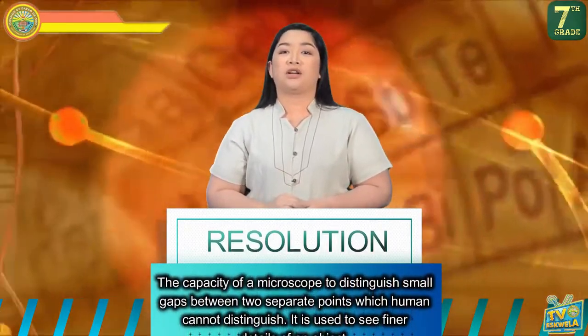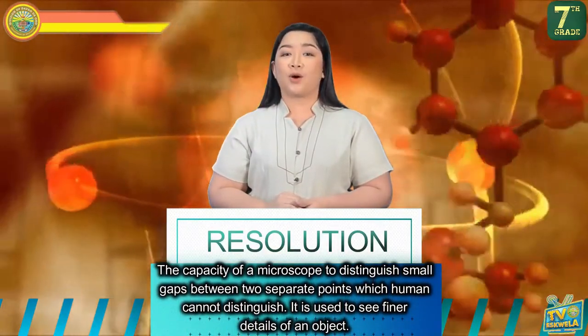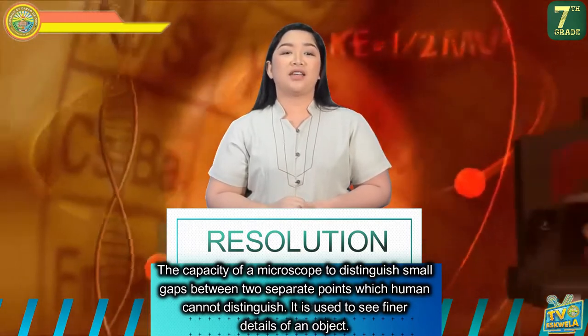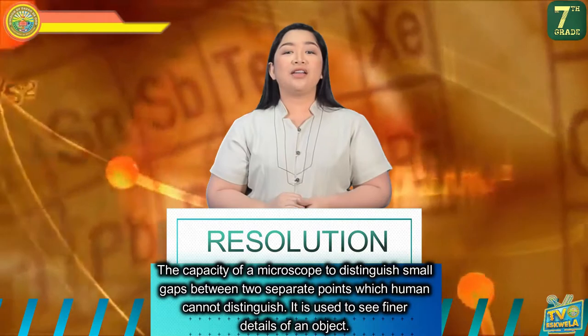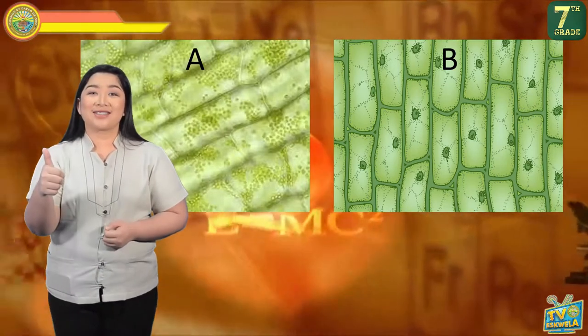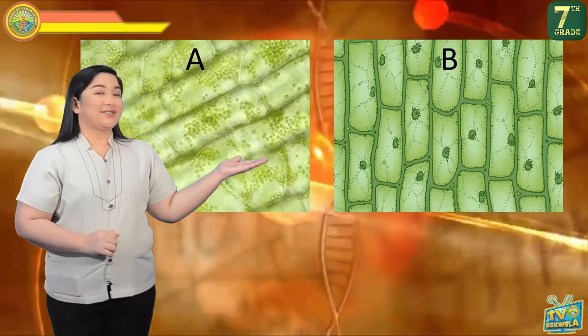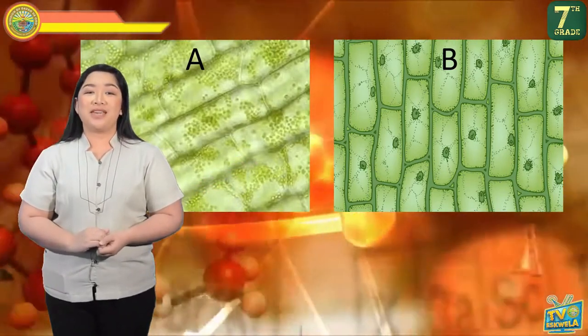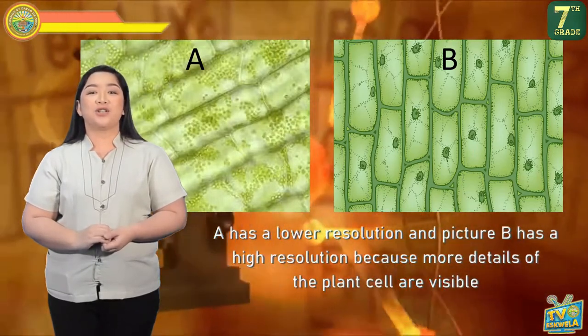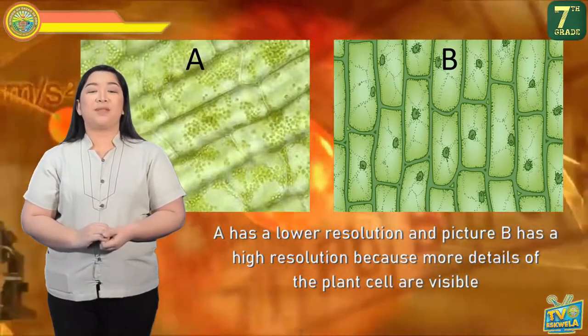On the other hand, resolution or resolving power is the capacity of a microscope to distinguish small gaps between two separate points which humans cannot distinguish. It is used to see finer details of an object. Compare the two pictures — picture B shows finer detail of a plant cell. Picture A has a lower resolution and picture B has a high resolution because more details of the plant cell are visible.